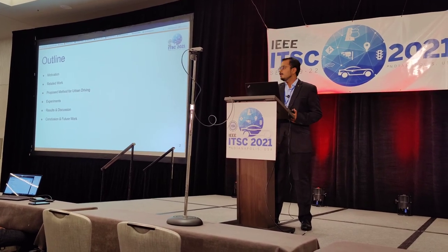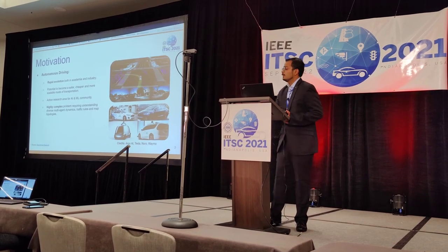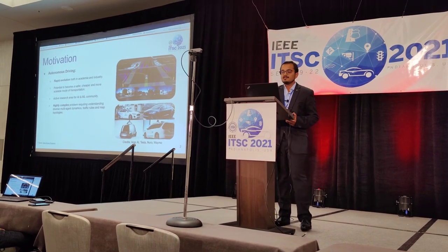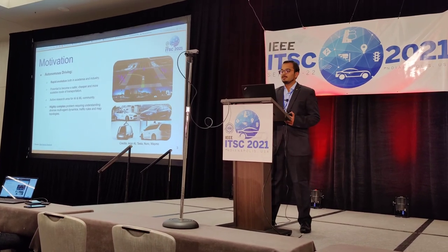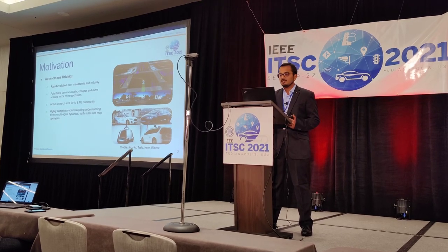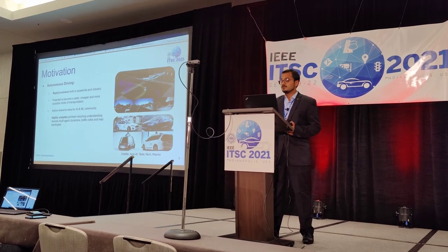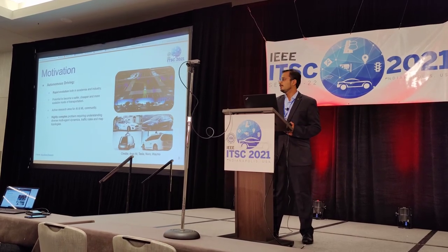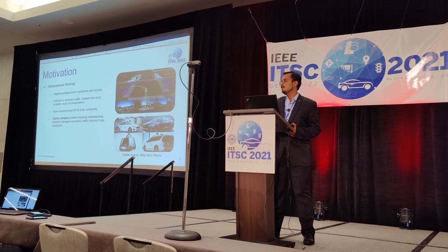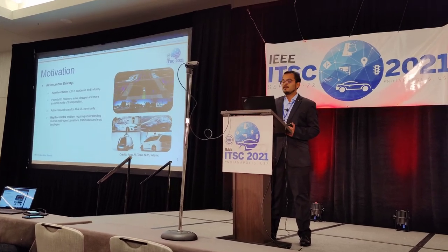So let's take a look at the problem statement. In the last few decades, autonomous driving has witnessed a rapid evolution both in academia and industry, as it possesses the potential to become a safer, cheaper, and more scalable mode of transportation. Nevertheless, autonomous driving in urban settings still remains an active area of research for the entire AI community, due to the complexity of the problem that requires understanding drivers' multi-agent dynamics, traffic routes, and various map topologies.